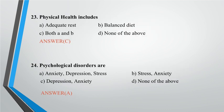Question 23: Physical health includes? A. Adequate rest, B. Balanced diet, C. Both A and B, D. None of the above. Answer: C.